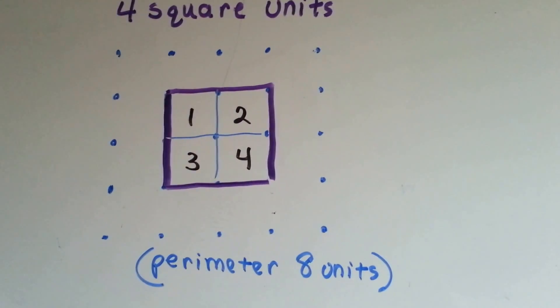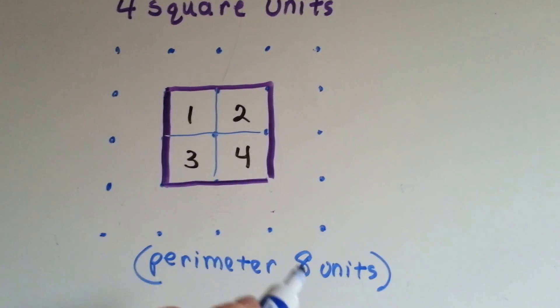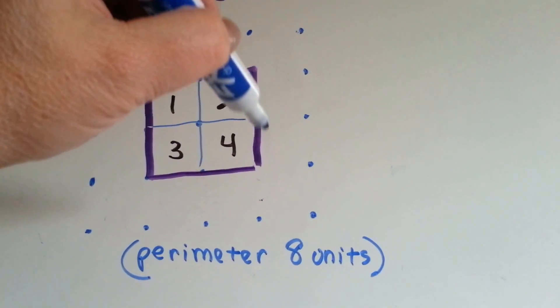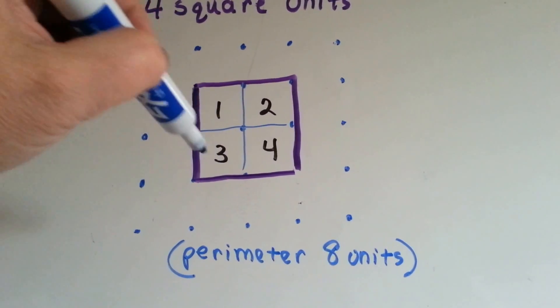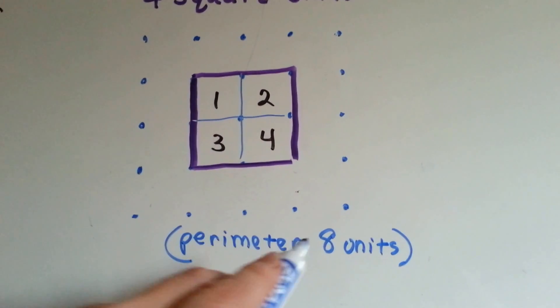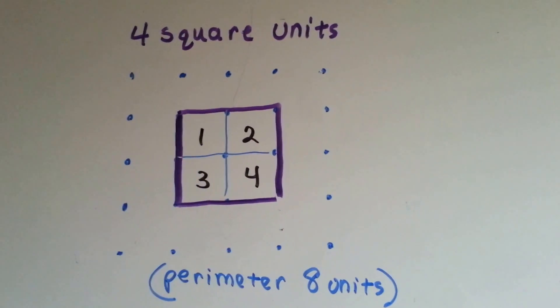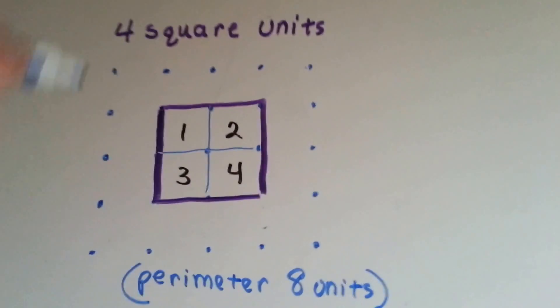One, two, three, four. But let's count the perimeter, because there's eight. One line, two lines, three lines, four lines, five lines, six lines, seven lines, eight line units. So there's eight units for the perimeter, but there's only four square units for the area.